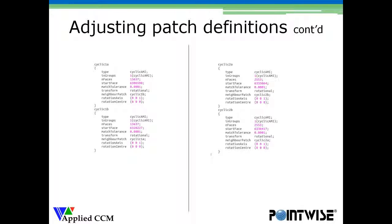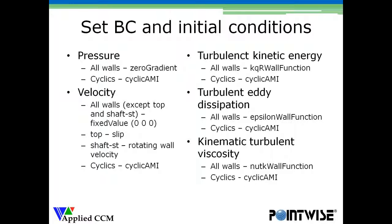This slide shows what you have to do to use those boundary conditions with the AMI condition. The number of faces and start faces stay the same — that's defined by the mesh. You have to change the type from 'cyclic' to 'cyclicAMI.' You have to introduce a match tolerance, which is the area that can differ between the two cyclic patches before it's classed as a non-match. The type of transformation is rotational. The neighbouring patch for cyclic 1A is cyclic 1B, hence the naming convention in PointWise so you know what patch goes with what. Then you specify the rotational axis and the rotational centre.